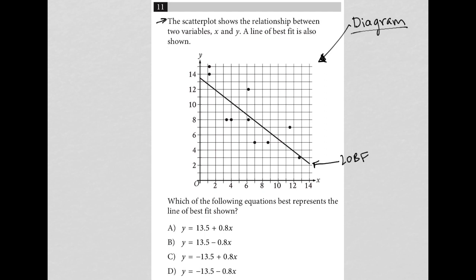The question goes on to say the scatter plot shows a relationship between two variables, X and Y. A line of best fit is also shown. Which of the following equations best represents the line of best fit? Alright, so whenever we talk about the equation of a line, we're thinking Y equals MX plus B. And the most important things to pay attention to here are B and M.